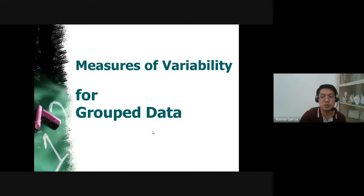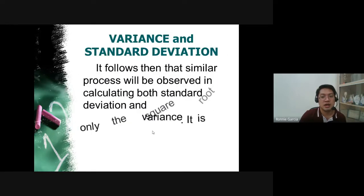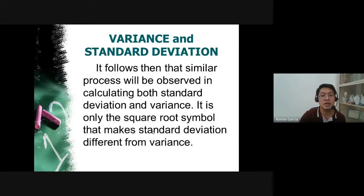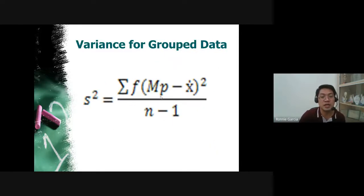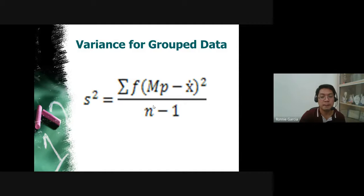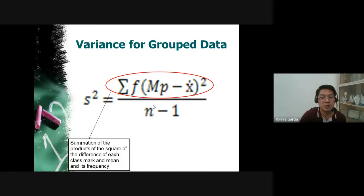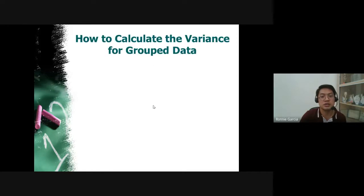For grouped data variance, the formula is: s² = Σ[f × (mp − x̄)²] / (n − 1), where f is frequency, mp is the midpoint (class mark), and x̄ is the mean. This involves multiple steps: first compute the mean, then calculate the midpoints, then compute squared deviations, multiply by frequency, sum them all, and divide by n − 1. This is very complicated to do by hand, so using MS Excel is strongly recommended.